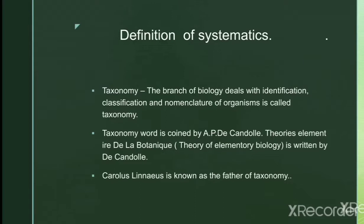The first term is taxonomy. Taxonomy is the branch of biology which deals with the identification, classification, and nomenclature of organisms. In taxonomy, we identify organisms, classify them according to their similarities and dissimilarities, arrange them into groups and subgroups, and give them proper names.